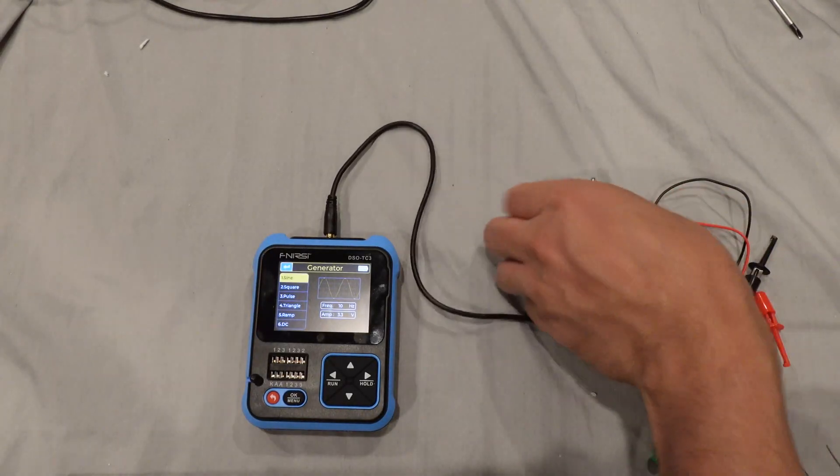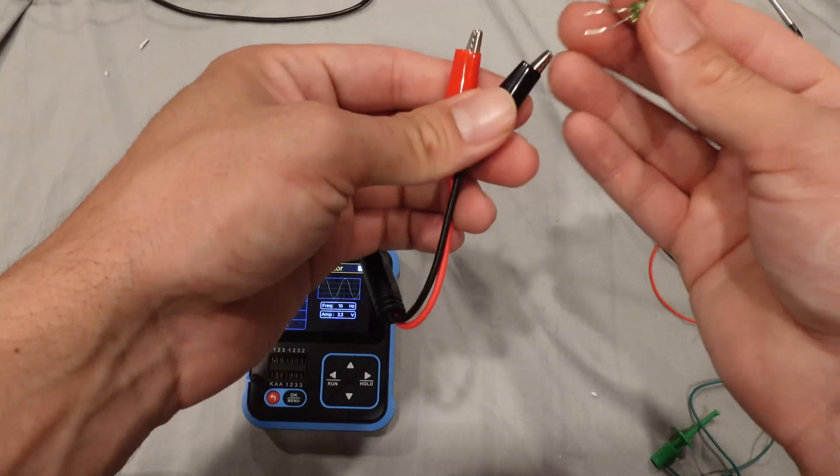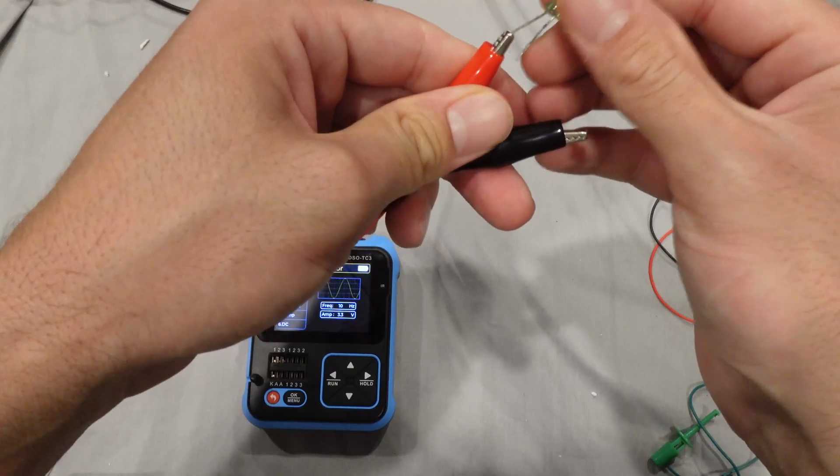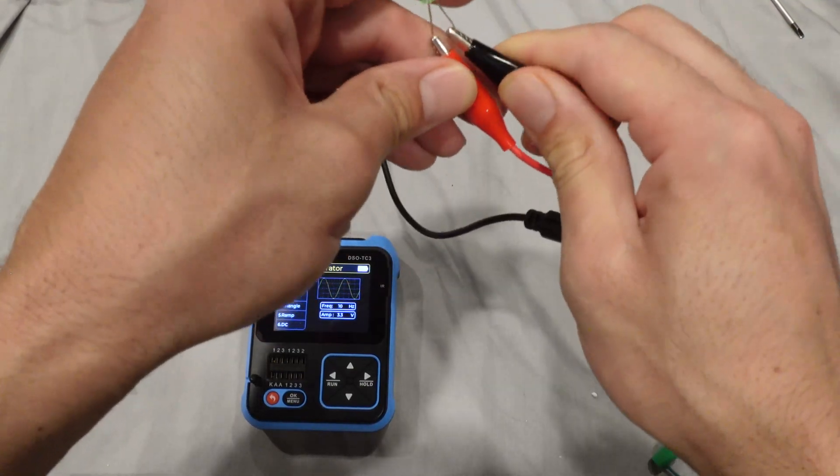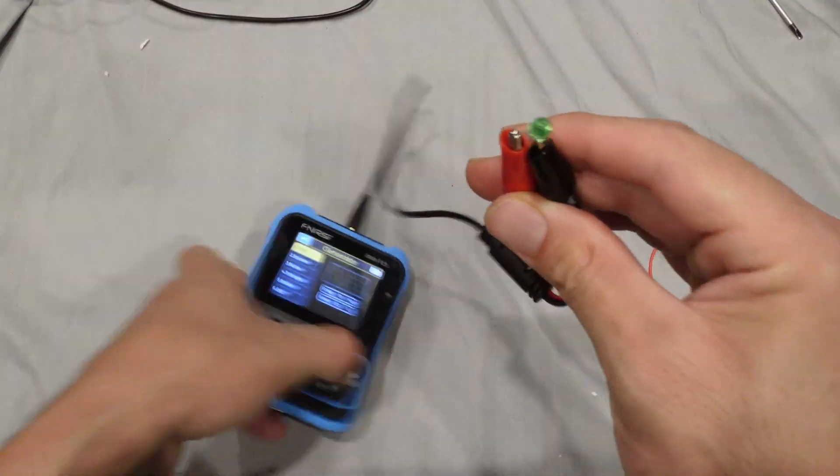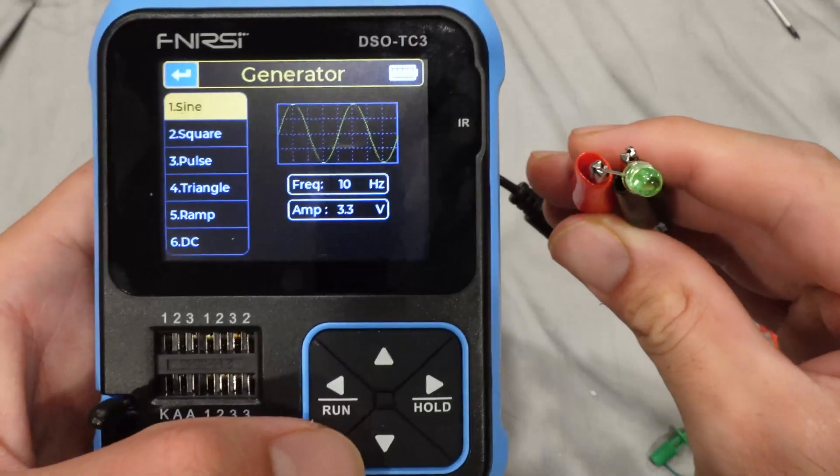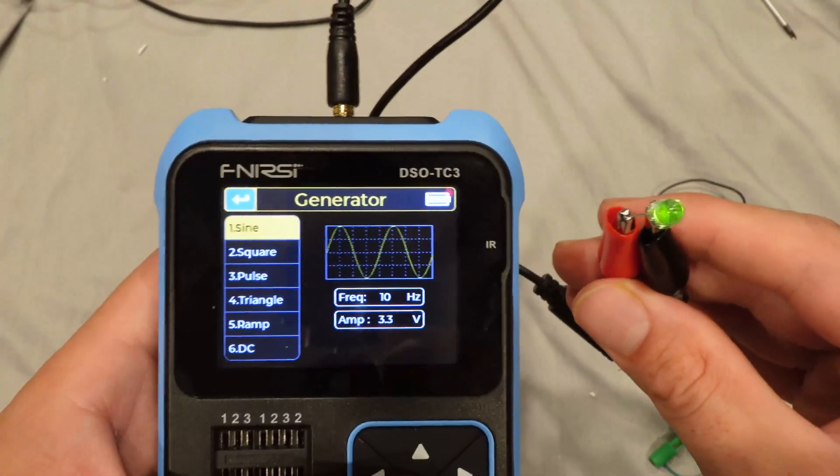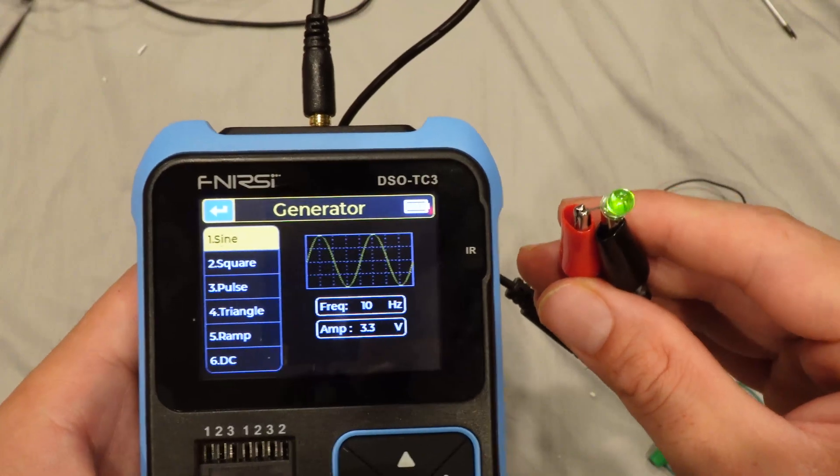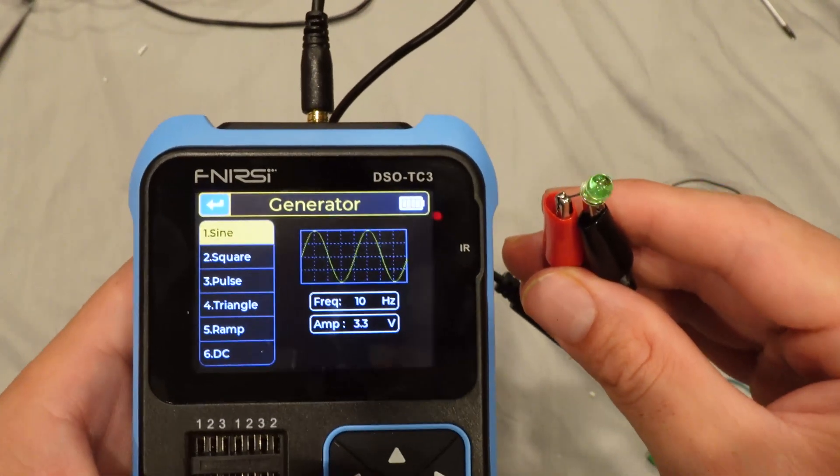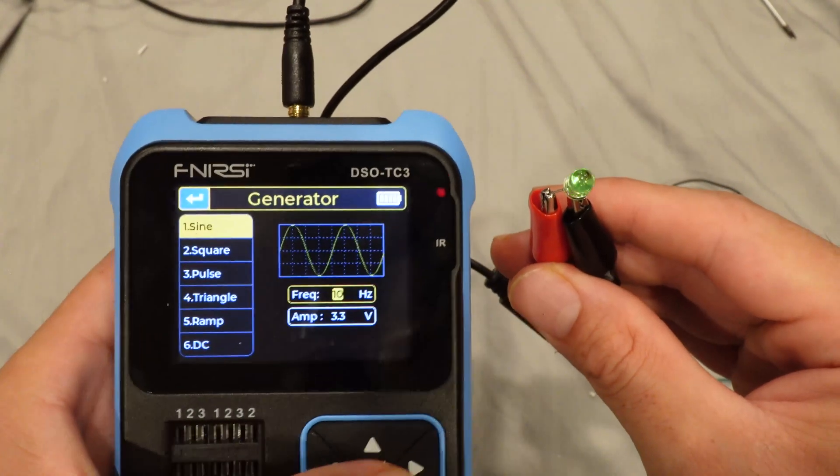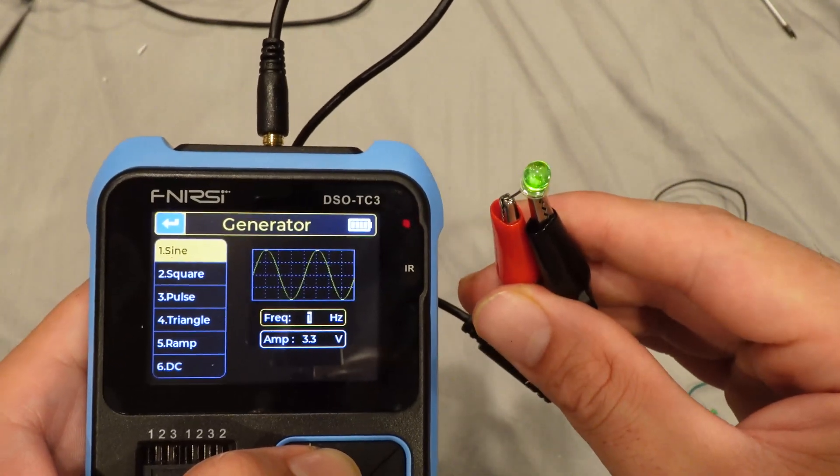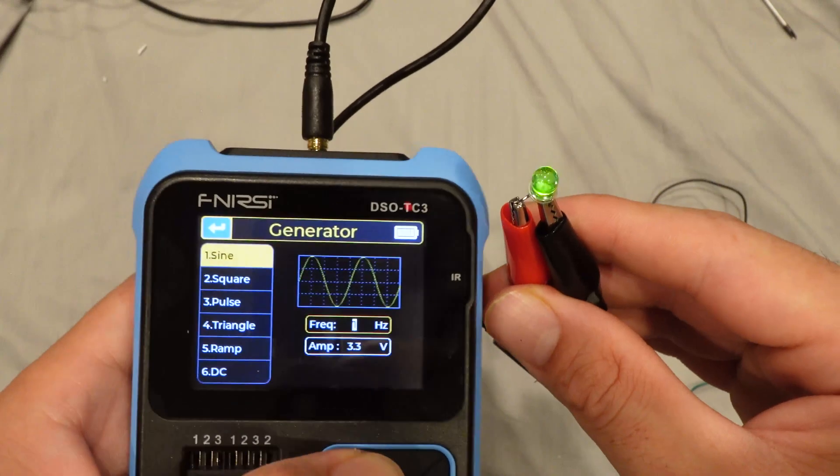And for that we can use a simple LED to see what's going on. So right now the frequency is like 10 hertz and the amplitude is 3.3 volts. You can go and change this. As you can see the LED blinks. We also have this square.